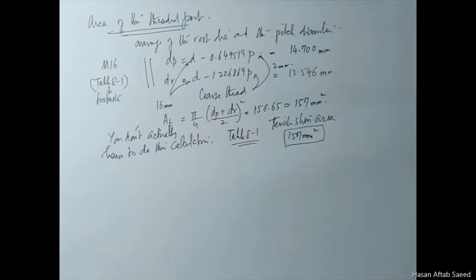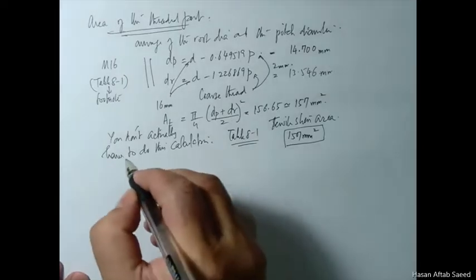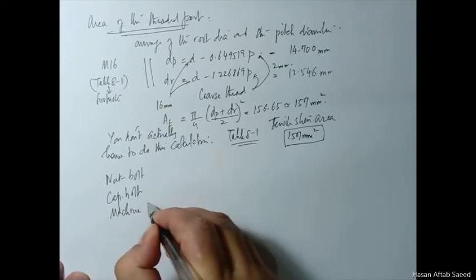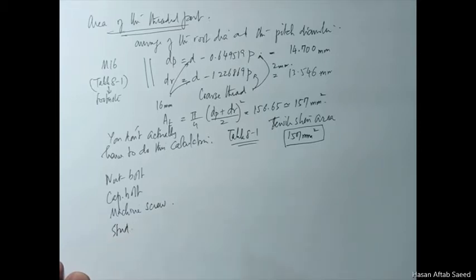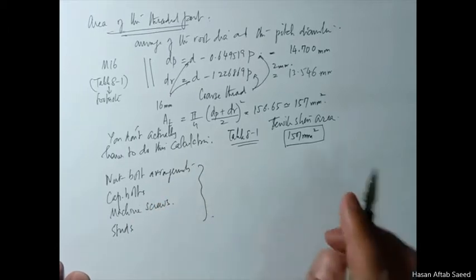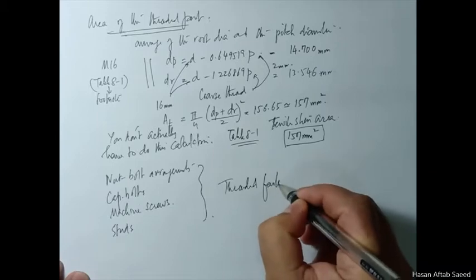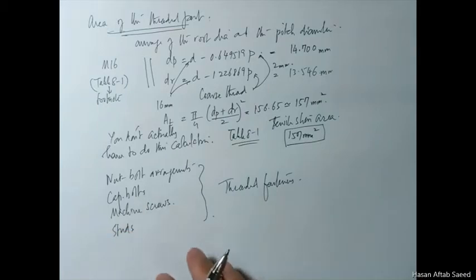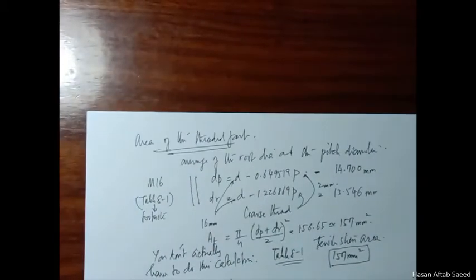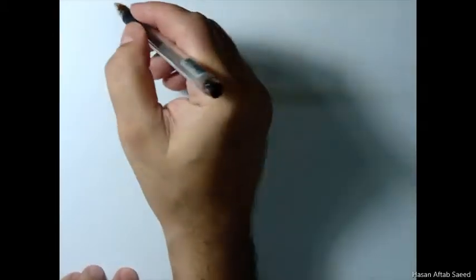Now let's talk about another aspect of threaded fasteners: how they are used. You would have heard about the nut-bolt arrangement, and then there is something called a cap bolt, a machine screw, and also a stud. These are all threaded fasteners, and most of the things we will talk about will be common to all these arrangements — there will be some differences, but most of the theory can be applied to all with minor adjustments.